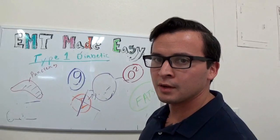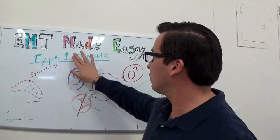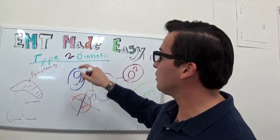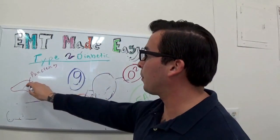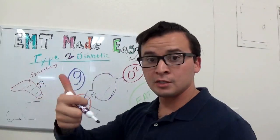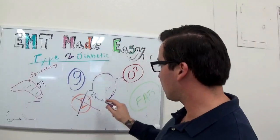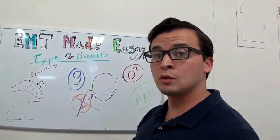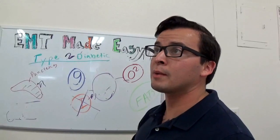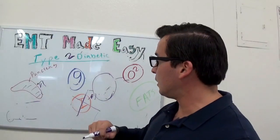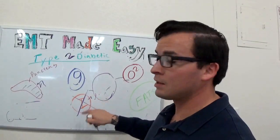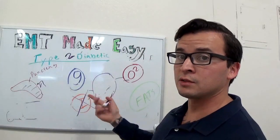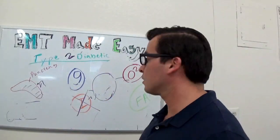With Type 2 diabetes, the pancreas may be producing insulin but the receptors aren't picking it up, or there's not enough insulin being produced to open the doors for glucose to get into the cell.